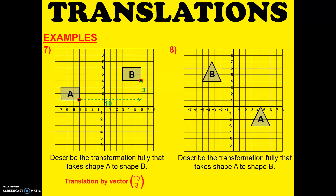How about the last example? Describe the transformation fully that takes shape A to shape B. That point to that point — 8 to the left and 7 up. So it's a translation by vector negative 8, 7.